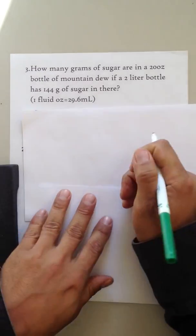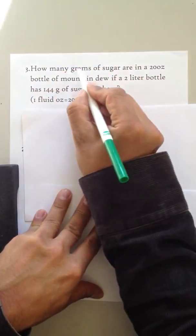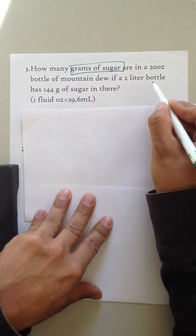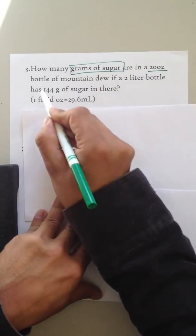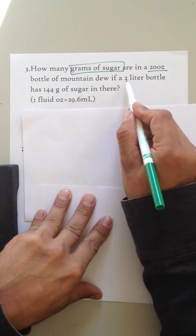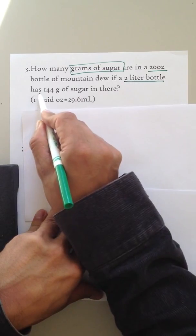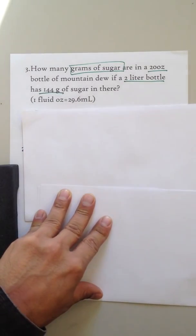How many grams of sugar—there's the question—how many grams of sugar are in a 20-ounce bottle of Mountain Dew if a 2-liter bottle has 144 grams of sugar in there?